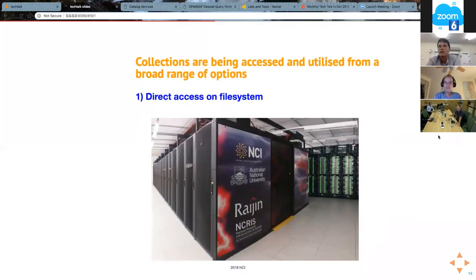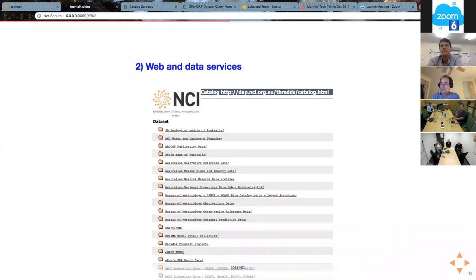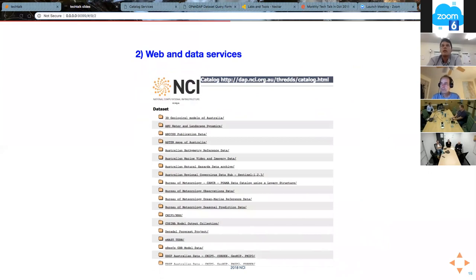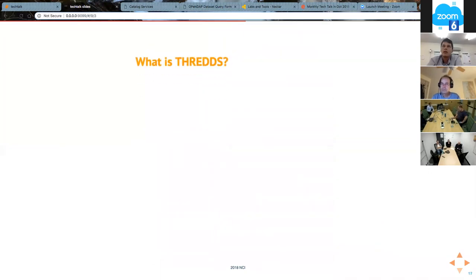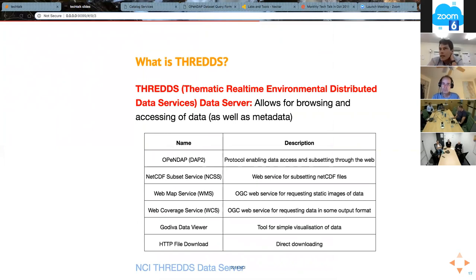So the collections we have at the NCI, like I said, we have 10 plus petabytes of research data. Access utilizes a variety of options. Direct access on the file system, so if you have access to the Raijin supercomputer, you can just access data directly, or using web and data services. We use the THREDDS data server. This allows for browsing and accessing of data as well as metadata. There are various tools associated with the THREDDS data server, OpenDAP, or you can grab a link and plug it into Python or R and work on it.